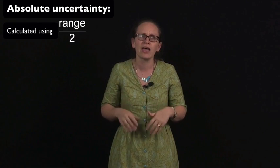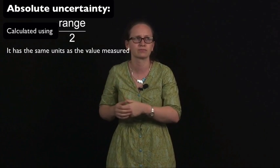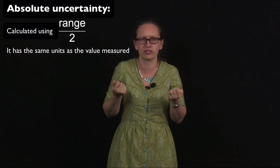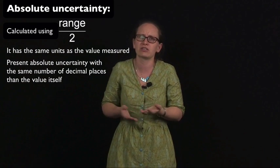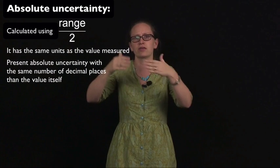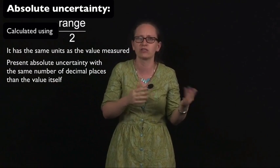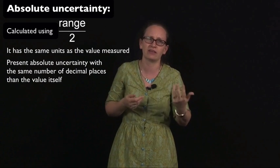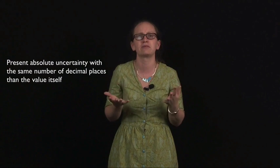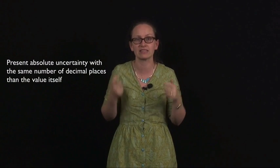There are two ways that we can represent our uncertainty. The most common way, and the way that you should use at the end of the experiment, is the absolute uncertainty. The absolute uncertainty is the one calculated using range over two, and it has the same units as the value that you're measuring. When presenting the absolute uncertainty, it's important that you present it with the same number of decimal places as the value. It doesn't make much sense to present the uncertainty with more decimal places than the value, because you'd be claiming to know the uncertainty more precisely than the value itself, which would be ridiculous.